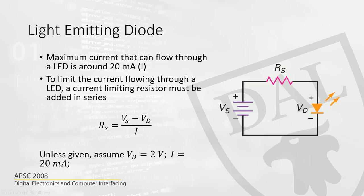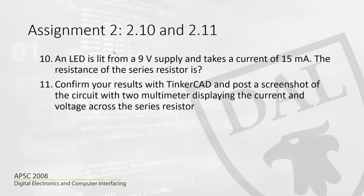Now, a light emitting diode — we have seen this circuit in the example. If we have to design a series resistor, we know the supply voltage, and assuming that the voltage drop across the LED is two volts and we want to limit the current flowing through the circuit to 12 milliamperes, you just plug in those numbers and you will get the resistance. So let's do a sample problem here.